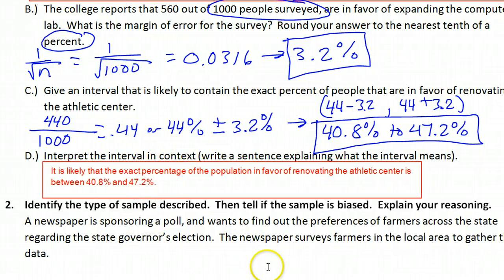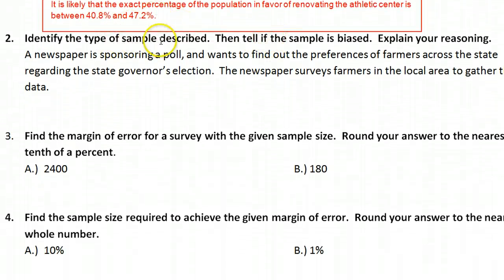Let's move on to number two. Identify the type of sample described. Then tell if the sample is biased. Explain the reasoning. A newspaper is sponsoring a poll and wants to find out the preferences of farmers across the state. That's our population. Farmers across the state regarding the state governor's election. Our population is farmers. The newspaper surveys farmers in the local area to gather their data.